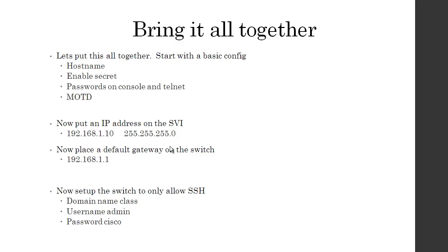To put it all together for a basic switch configuration: hostname (e.g., Switch1). Enable secret Cisco. Then passwords on console and telnet lines — always four commands: password Cisco, login, logging synchronous, exec-timeout 30 0. Banner message of the day. That's the basic config: hostname, passwords, banner. Then for an IP address on the switch, go to the switch virtual interface: interface VLAN 99, IP address (blah blah). Default gateway from global mode: IP default-gateway (IP address). And for SSH: domain name, username, and password — you're all set.